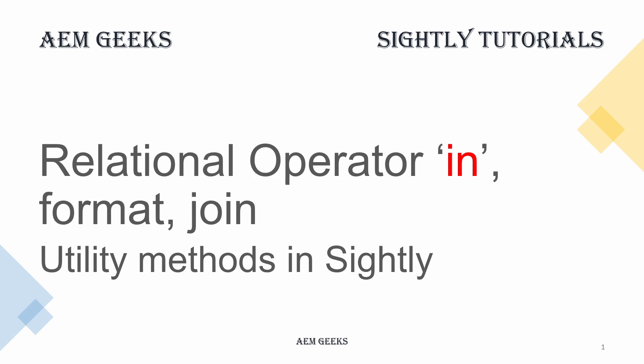In this tutorial I will discuss some utility functions available in Sightly which will make your life easier. For example, if you want to search for an item within an array or list, or find a substring within a string, you would normally write code in a Sling model and return the result to Sightly. But Sightly provides a better way to achieve these tasks within Sightly itself.